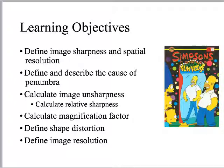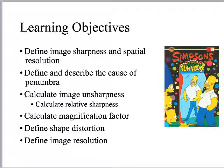The learning objectives we've got: define image sharpness and spatial resolution, talk about stuff that causes penumbra — that's a big takeaway, defining that term — we're going to need to do some math related to sharpness and relative sharpness, magnification factor, shape distortion, and finally define image resolution, kind of that umbrella term. We've already started talking about contrast, but we're going to define the big umbrella term resolution under which contrast lives. I shared an email with y'all that I sent to the seniors, because around this time next year you're going to be preparing for the registry and asking me questions about math. Pay attention to the math — it is super impactful to every single x-ray that you ever take, and there are really only five formulas we need to know. One of them you're going to be learning today.